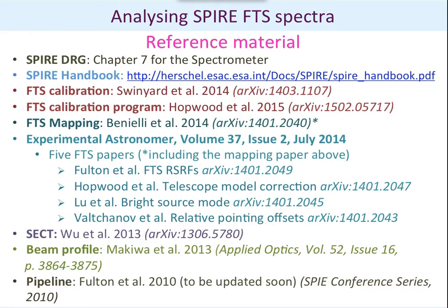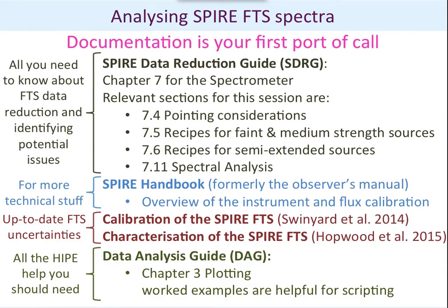That mapping paper is part of a set of five papers that went into Astronomy & Astrophysics last summer. Among those, you might also be interested in the relative pointing offset paper, which we're going to get to later. There's also a paper on SECT, on the beam profiles, and the pipeline paper, which is getting ready for a new version soon. The first protocol when looking at FGS data is probably going to be the SPIRE Data Reduction Guide, which contains most of the information you need. The relevant sections for this session include: point source considerations, recipes for data and spectral disorders, recipes for systematic tendencies, and spectral analysis. For more technical information, go to the SPIRE Handbook. For up-to-date FGS uncertainties, look at the calibration pages — there's a link to that later on.